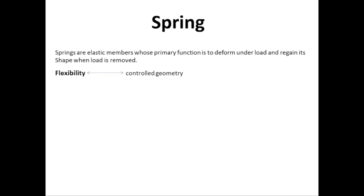Flexibility is the main property of the spring. In engineering, we often need flexibility for various reasons, and for that we can use the spring. This flexibility greatly depends on the geometry of the body — meaning it depends on the size, shape, and other parameters of that body. The flexibility in the spring will be designed according to our need, not more and not less.